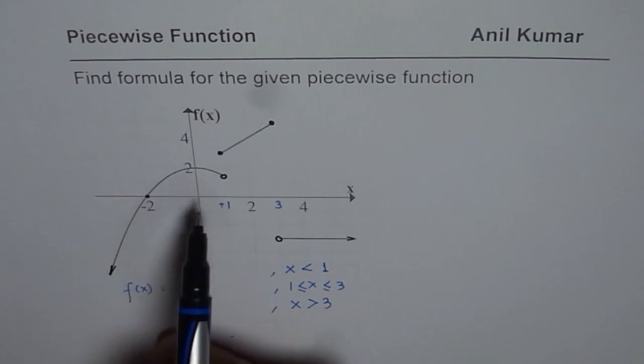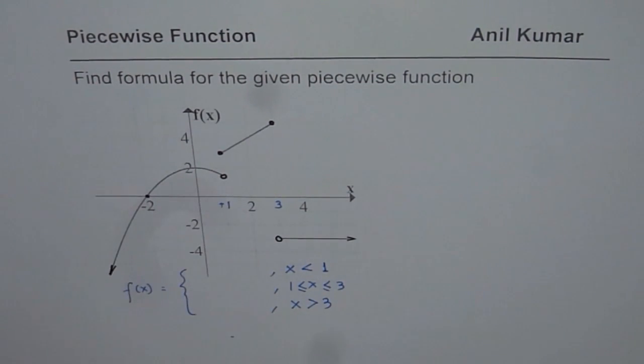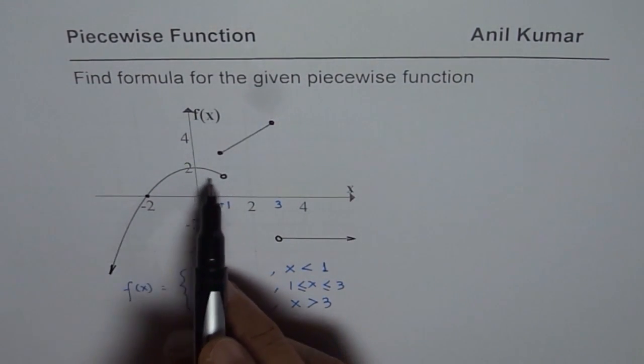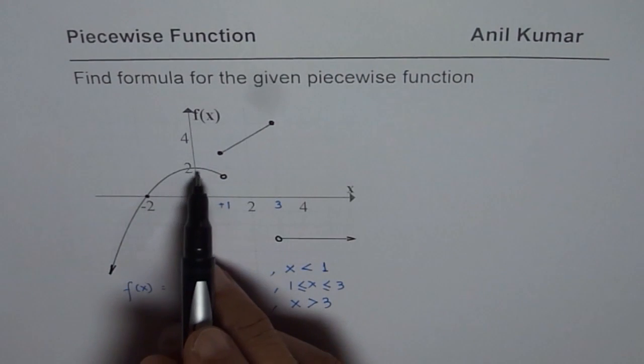Now let us find the formula for each function from the graph. So first one is a quadratic function. What can we do about it? We know this is a vertex kind of going downwards which is at 2.